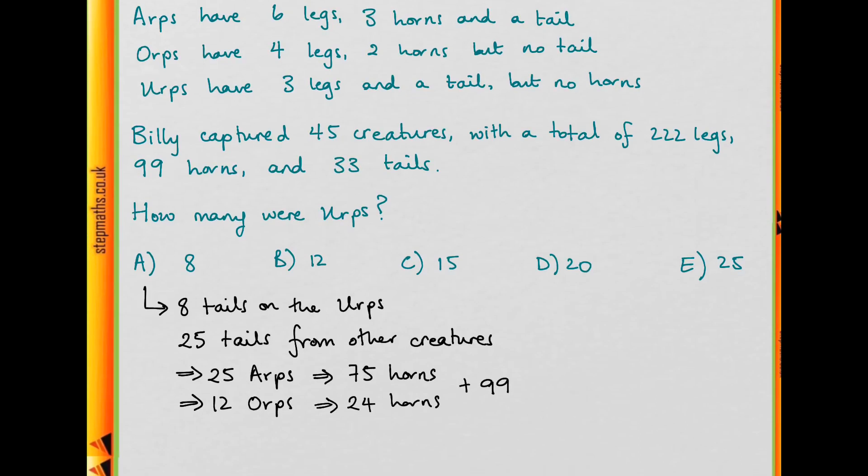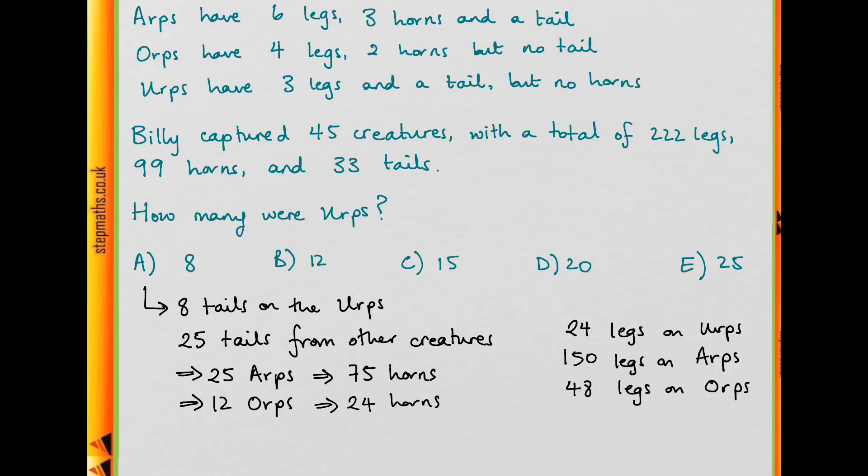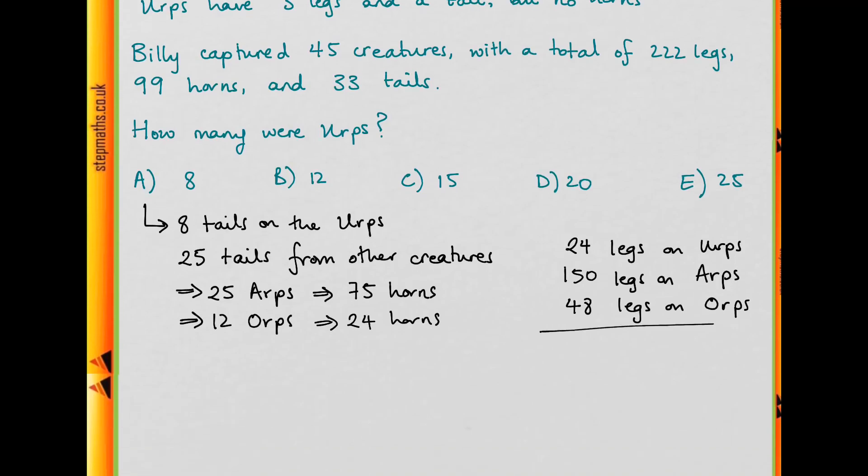So if we have 8 Earps and Earps each have 3 legs, so that's 24 legs. And we have 25 Arps and Arps each have 6 legs. So 25 times 6 will give us 150 legs on the Arps. And for Orps, we have 12 Orps and they'll have 4 legs. 12 times 4 is 48. So we have 48 legs from the Orps. And if we sum these together, we do indeed get 222 legs.